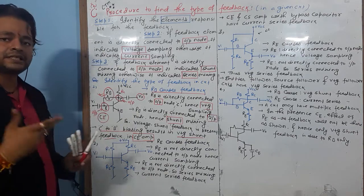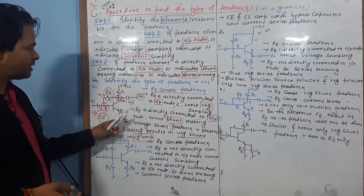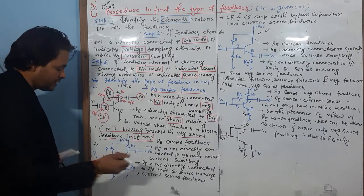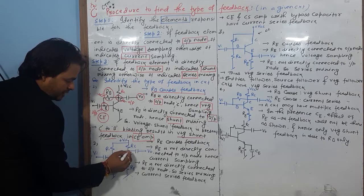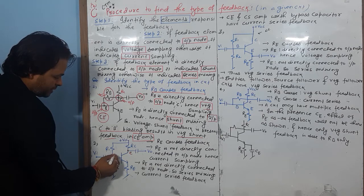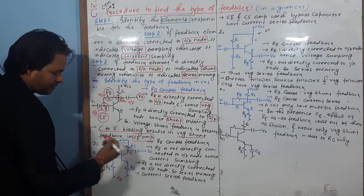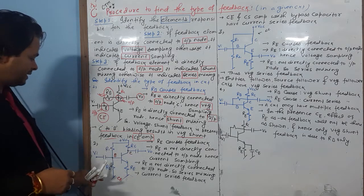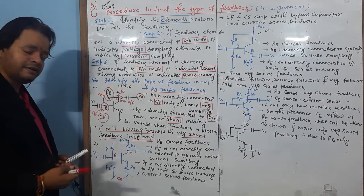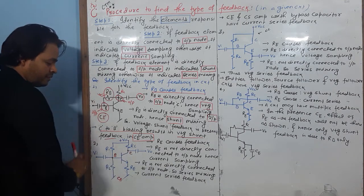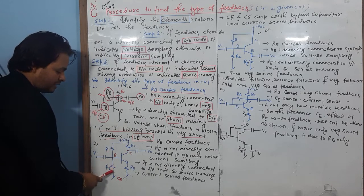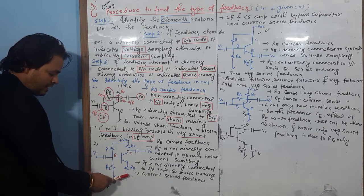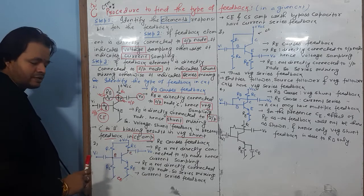Now for the second example — this is also a common emitter amplifier. The output node and input node are identified. The biasing elements are known. Now consider RE: RE can be connected to both the input node and the output node. But in this case, RE is grounded on one end, and connected to the base through R2.